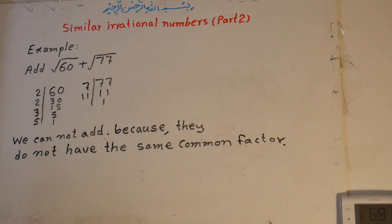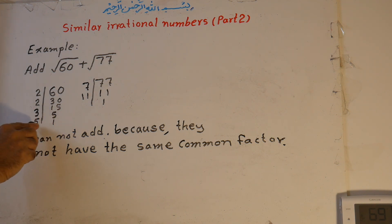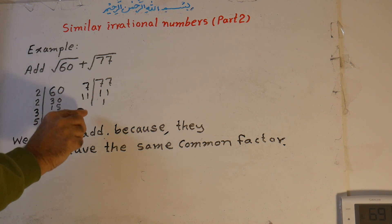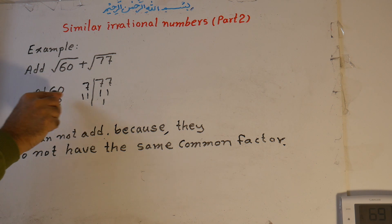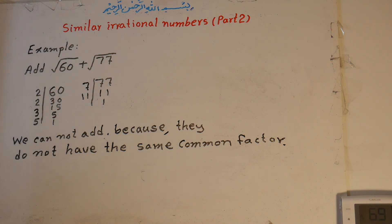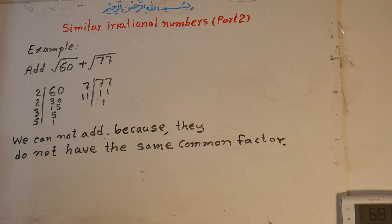Let me repeat the example: add √60 + √77. First, we factor them separately. 60 is divisible by 2 → 30; 2 → 15; 3 → 5; and 5 → 1. And 77 is divisible by 7 → 11; and by 11 → 1. Because there is no common factor between these two — 60 has 2, 3, 5 and 77 has 7 and 11 — we cannot add them because they do not have the same common factor.